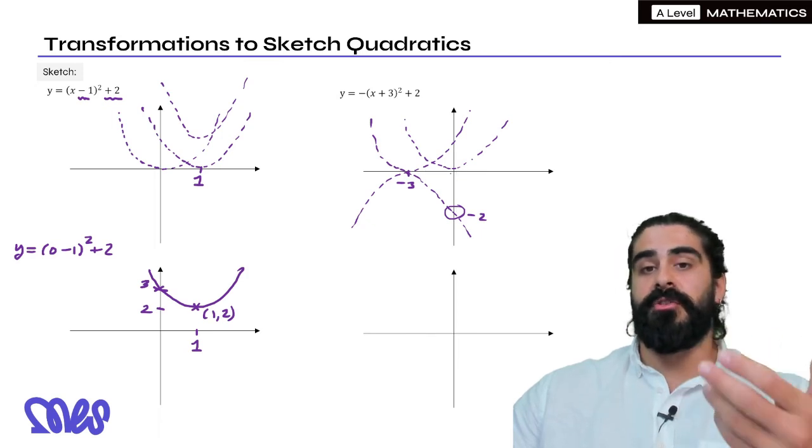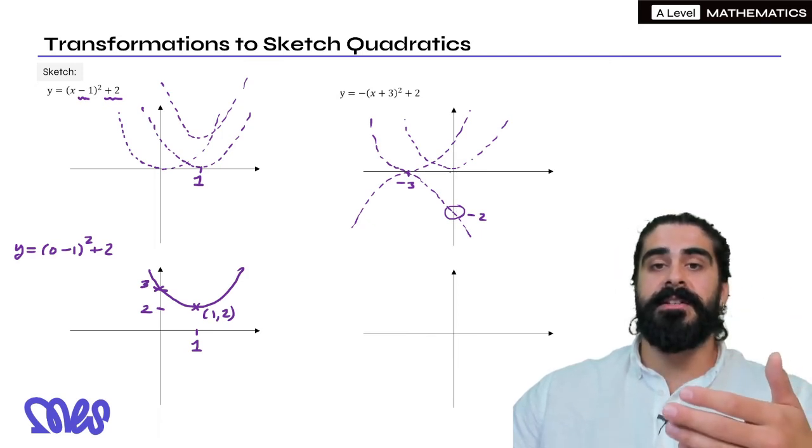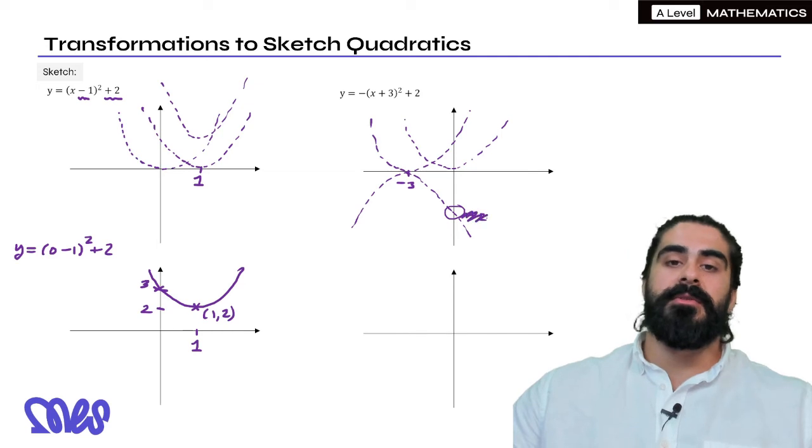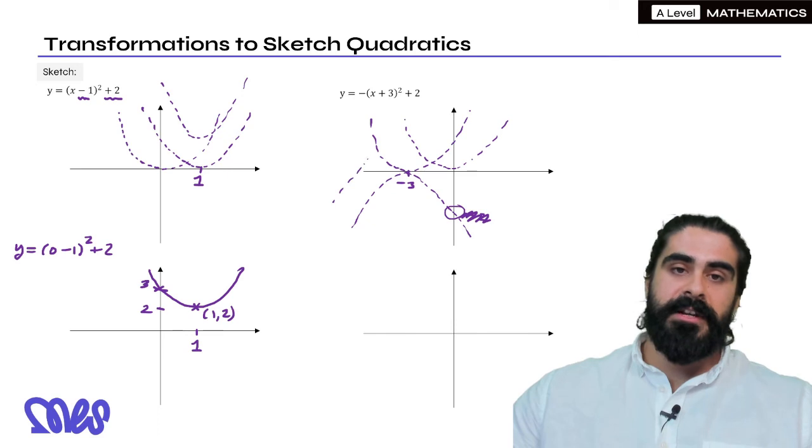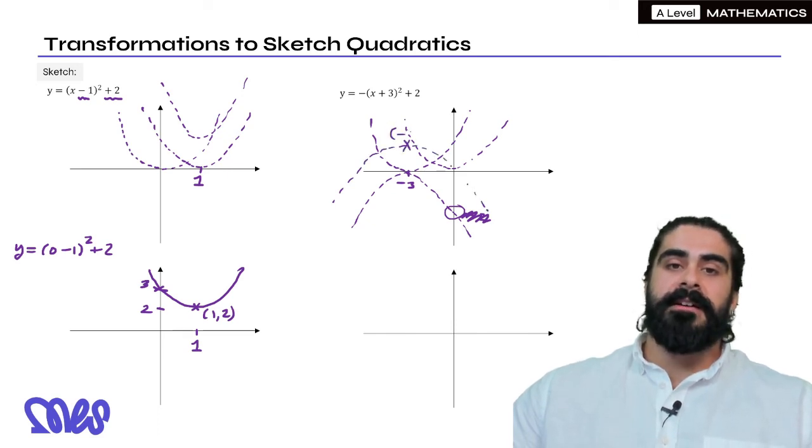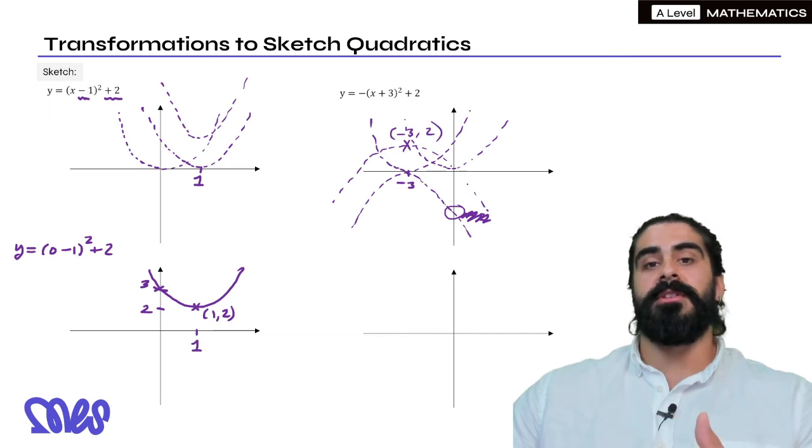When it goes up it could cross the intersection of the axes, it could go above or below. So we'll work that out in a second but essentially it's moving up by 2. So in our general sketch we can kind of just do whatever. The main thing is that it's at (-3, 2) the turning point.